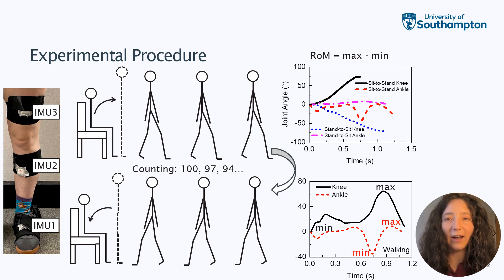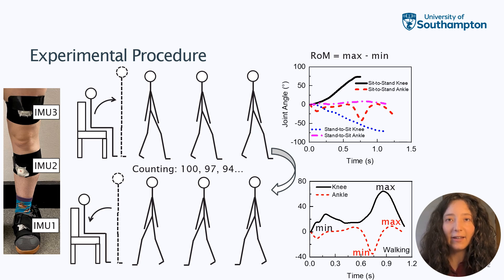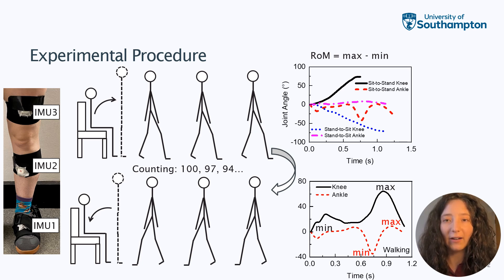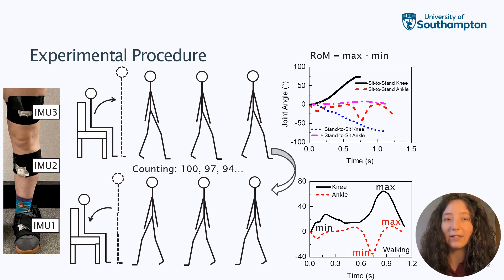Lower limb situated IMUs enable joint kinematics capture whilst performing TUG and C-TUG tests. The TUG test involved the participant starting from sitting, standing, walking three meters, turning around, walking back, and returning to sitting. The C-TUG involved the participant counting backwards during the task.